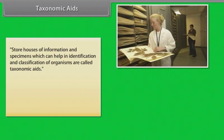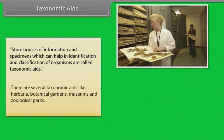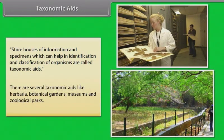Storehouses of information and specimens which can help in identification and classification of organisms are called taxonomic aids. There are several taxonomic aids like herbaria, botanical gardens, museums and zoological parks.